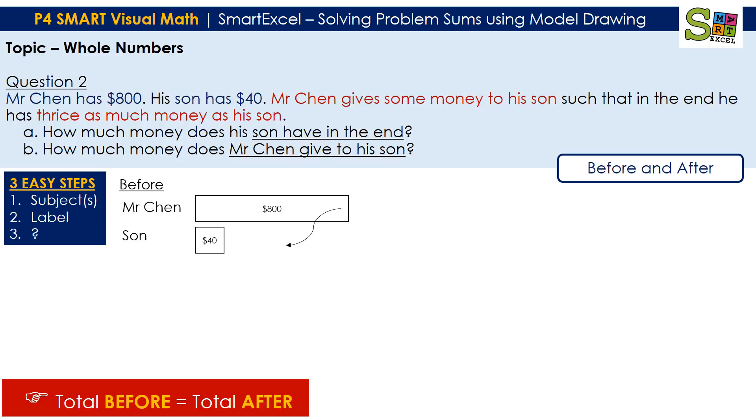Meaning there's an after model where after he gives some money to his son, which is the transfer of his money to the son. So there's another model, the after model. You can see from here, the before model for Mr. Chen is longer than the after model. And the one for the son, the one in grey, that is the amount that has been transferred, and your $40 is equal.